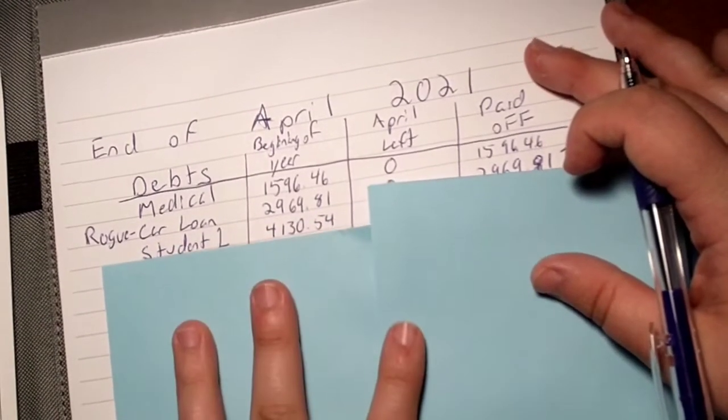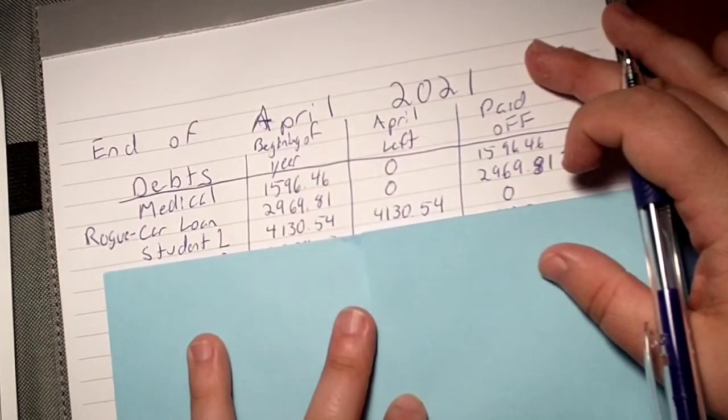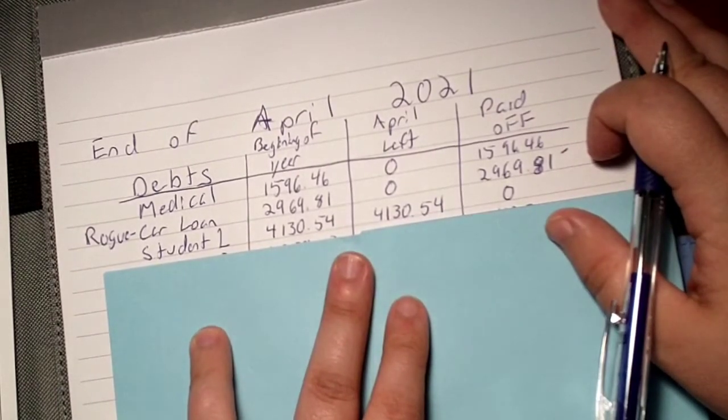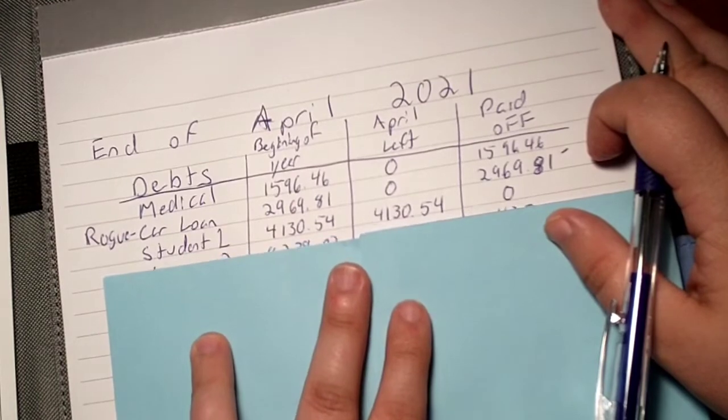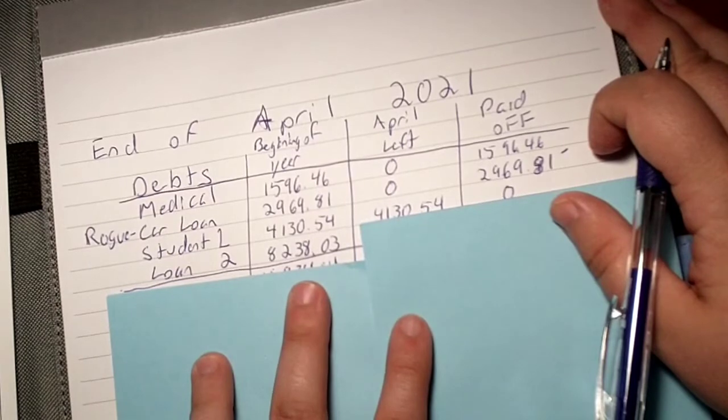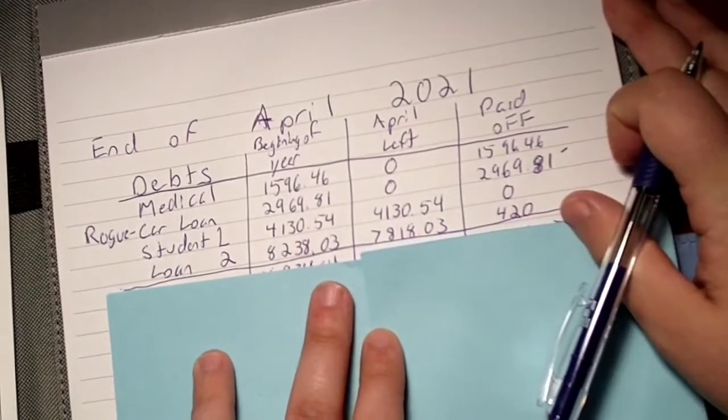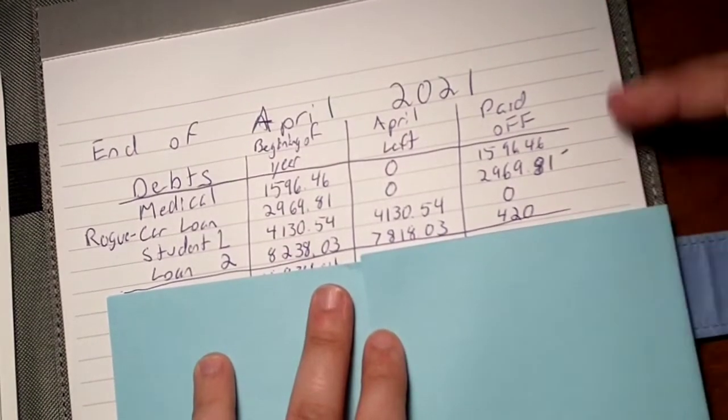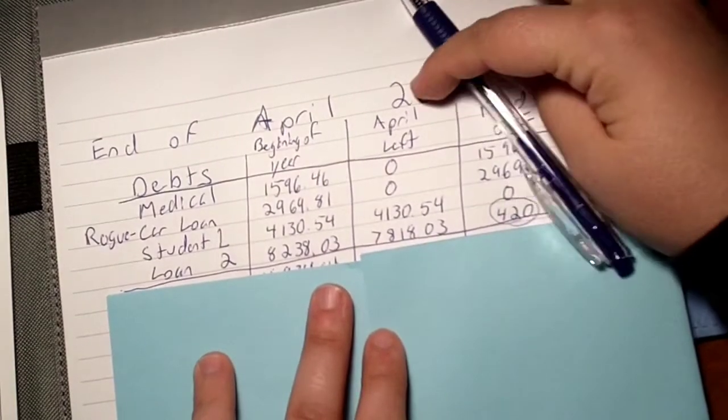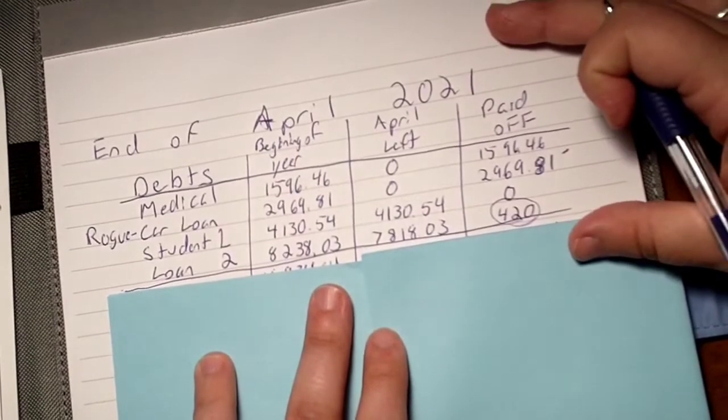Student loan one I didn't touch at all because it's in deferment. It's Great Lakes, it's federal, it's in deferment till January. And then my student loan two was $8,238.03. I just made a monthly payment of like a hundred and some dollars each month, so by the time April came around I had paid off 42 bucks of it.